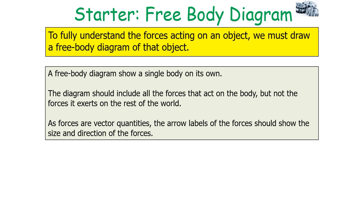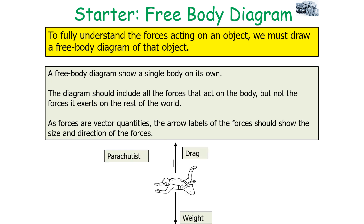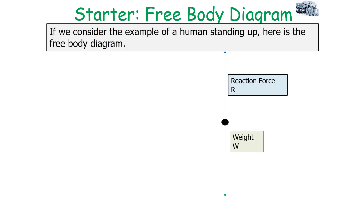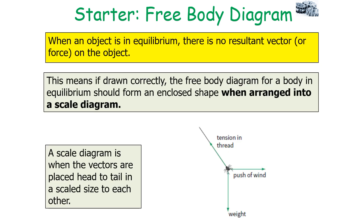As forces are vector quantities, arrow labels show both the direction and size. For example, a satellite has weight acting downwards; a parachutist has weight acting downwards and drag acting against the motion; and for a car, weight acts downwards with reaction forces opposing the surface. Considering a human standing up, the free body diagram shows weight acting downwards and a reaction force acting in the opposite direction. Since the human is in equilibrium, the two forces must equal each other.